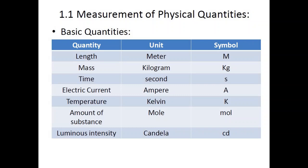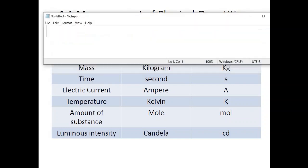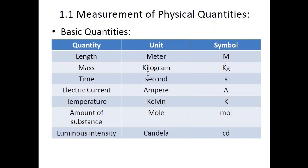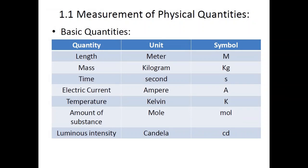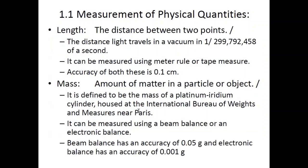The seven base quantities are: length, mass, time, electric current, temperature, amount of substance, and luminous intensity. Their SI units and symbols are: length — meter (m), mass — kilogram (kg), time — second (s), electric current — ampere (A), temperature — kelvin (K), amount of substance — mole (mol), and luminous intensity — candela (cd).